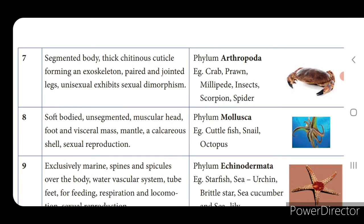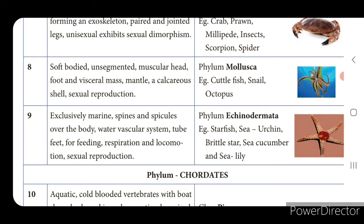Phylum Arthropoda — examples: crab, prawn, millipede, insect, scorpion, and spider. They have a segmented body, a thick chitinous cuticle forming an exoskeleton, jointed legs, and are unisexual exhibiting sexual dimorphism. Phylum Mollusca — examples: cuttlefish, snail, octopus. They are soft-bodied, unsegmented, with a muscular head, foot and visceral mass, mantle, and calcareous shell. Reproduction is sexual.